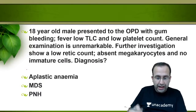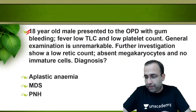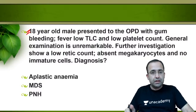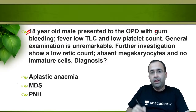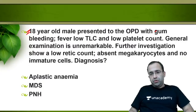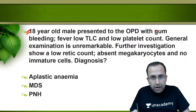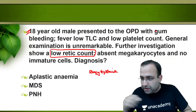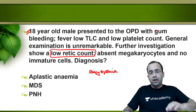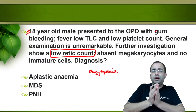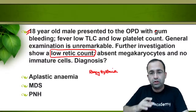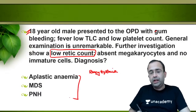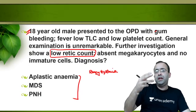Next question: an 18-year-old male presented to the OPD with gum bleeding, low TLC, and low platelet count. General examination is unremarkable; the patient has low retic count. This is a case of pancytopenia. All three — aplastic anemia, MDS, and PNH — are associated with pancytopenia. PNH can progress to aplastic anemia and vice versa.